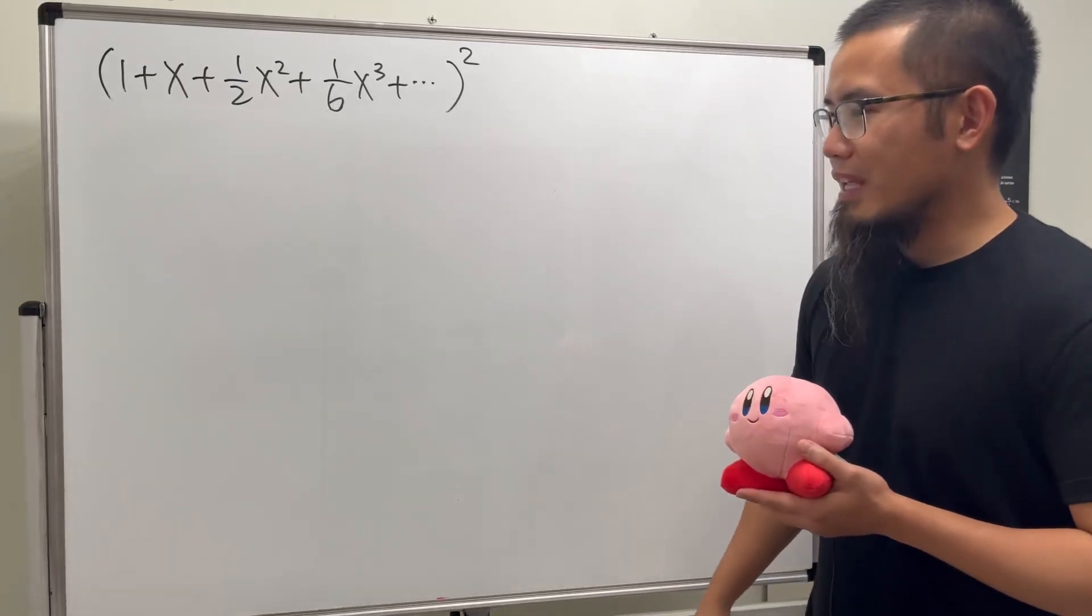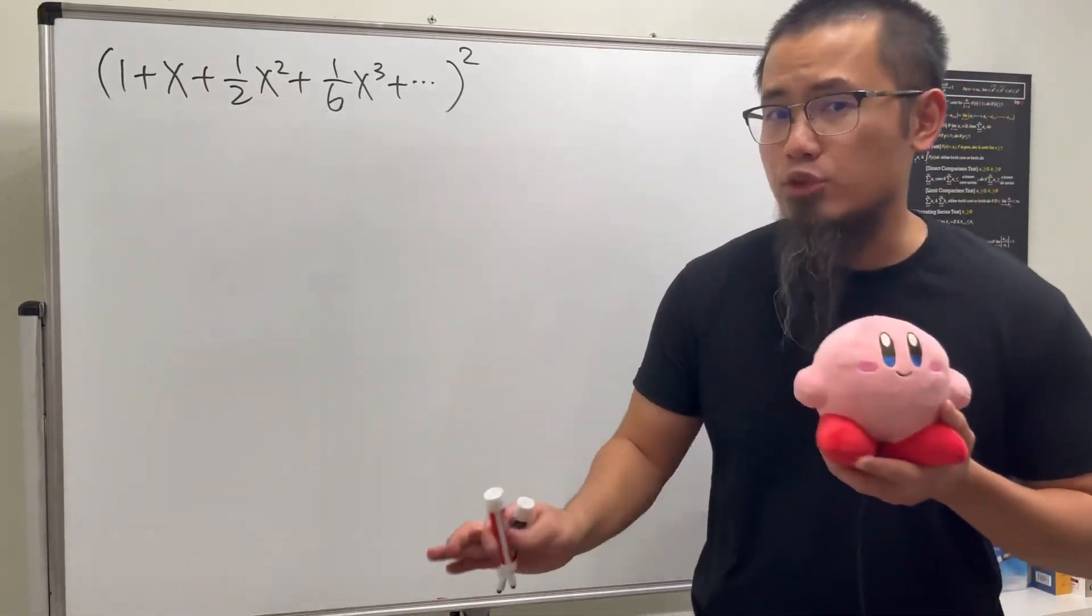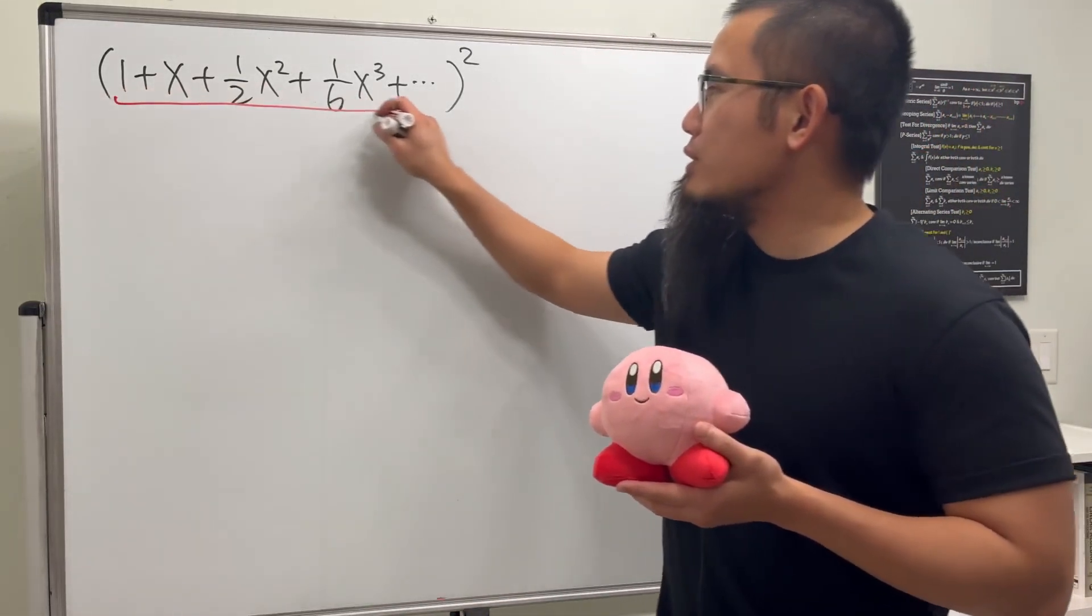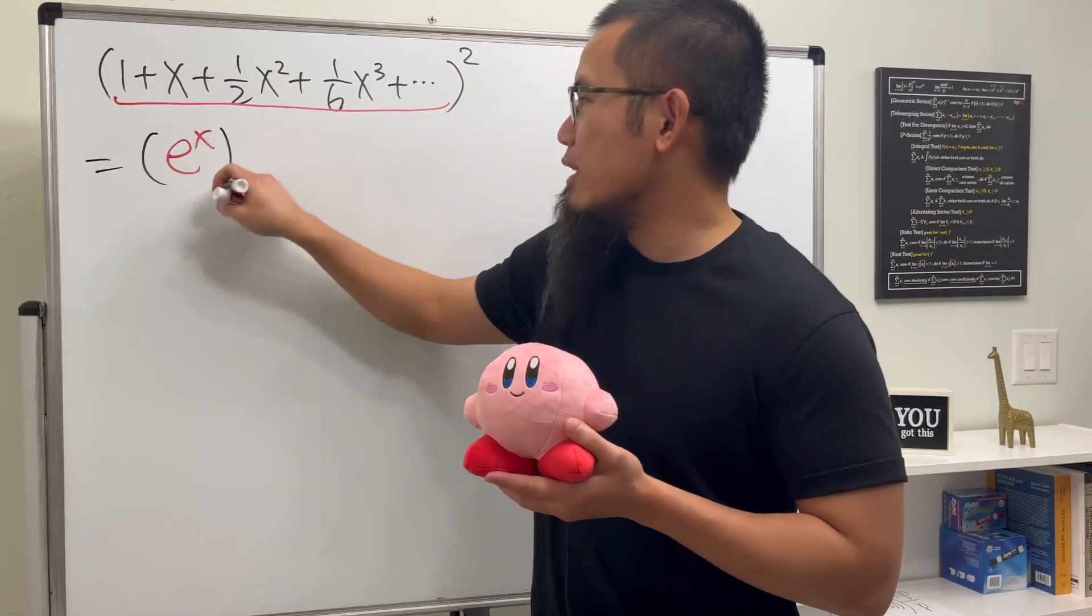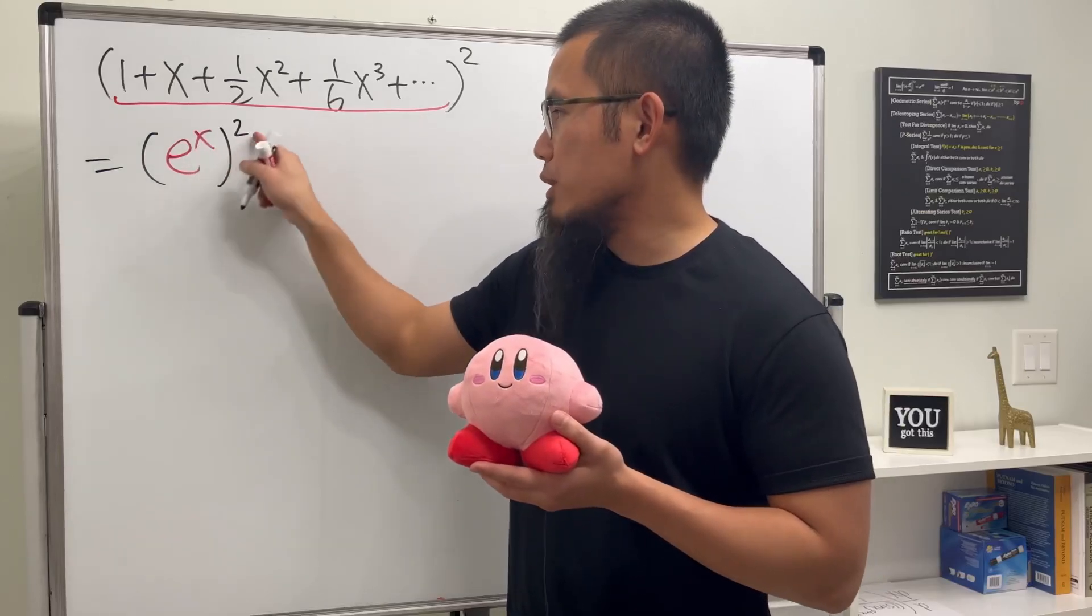To expand this, let me tell you it's actually not so bad because the inside here is actually just equal to e to the x, thanks to the power series. So we can just take e to the x and raise it to a second power, and of course we can just multiply the powers together.